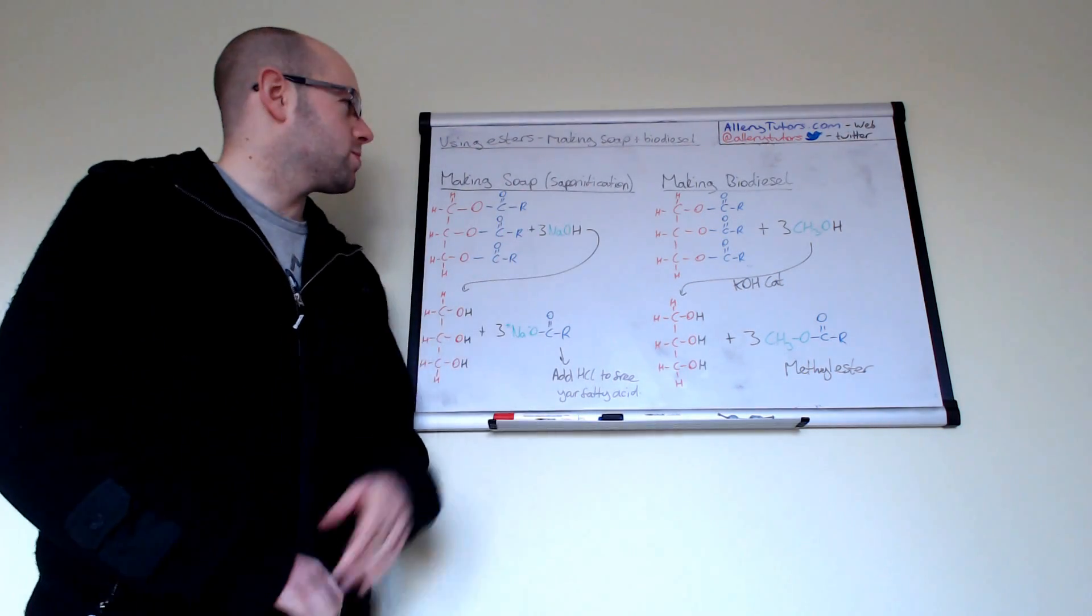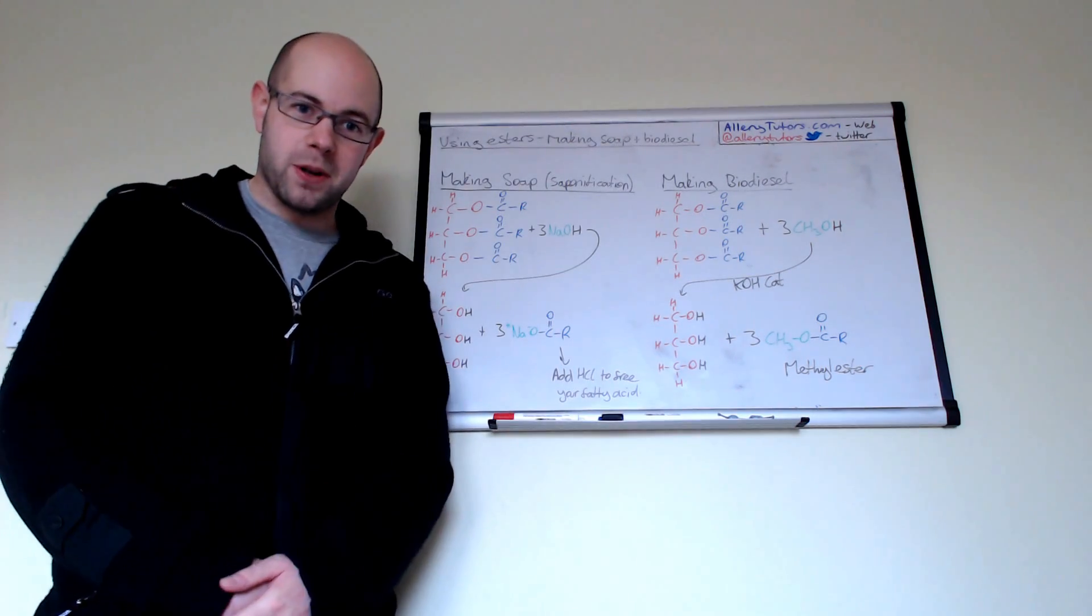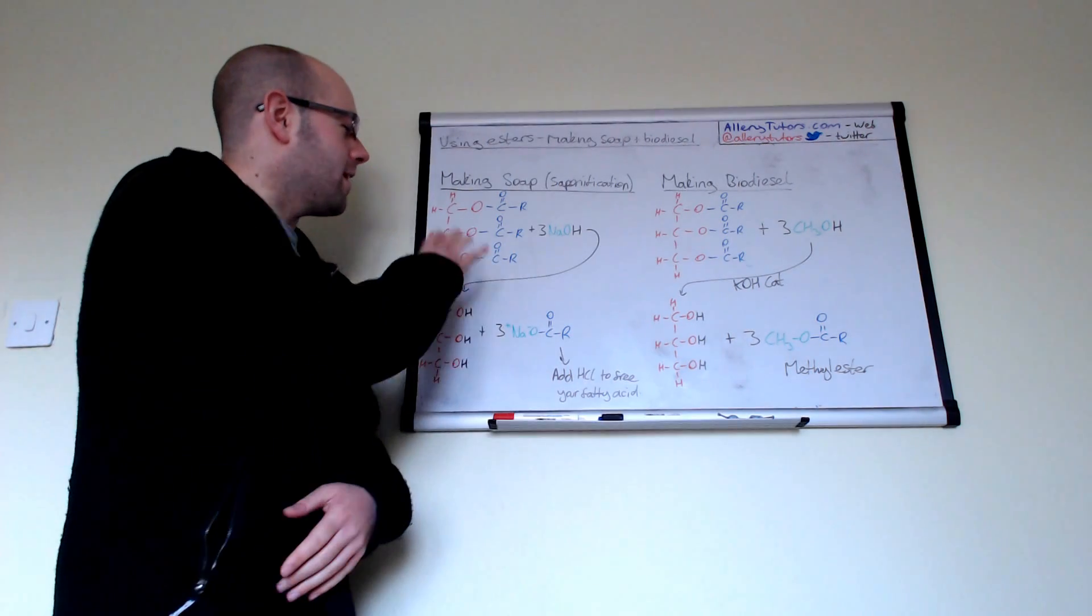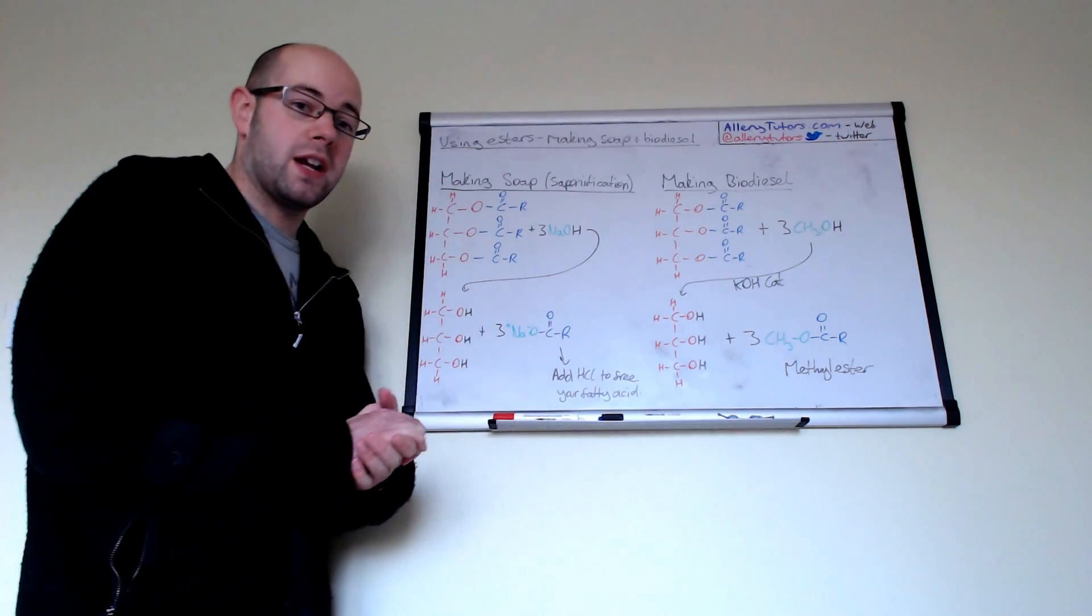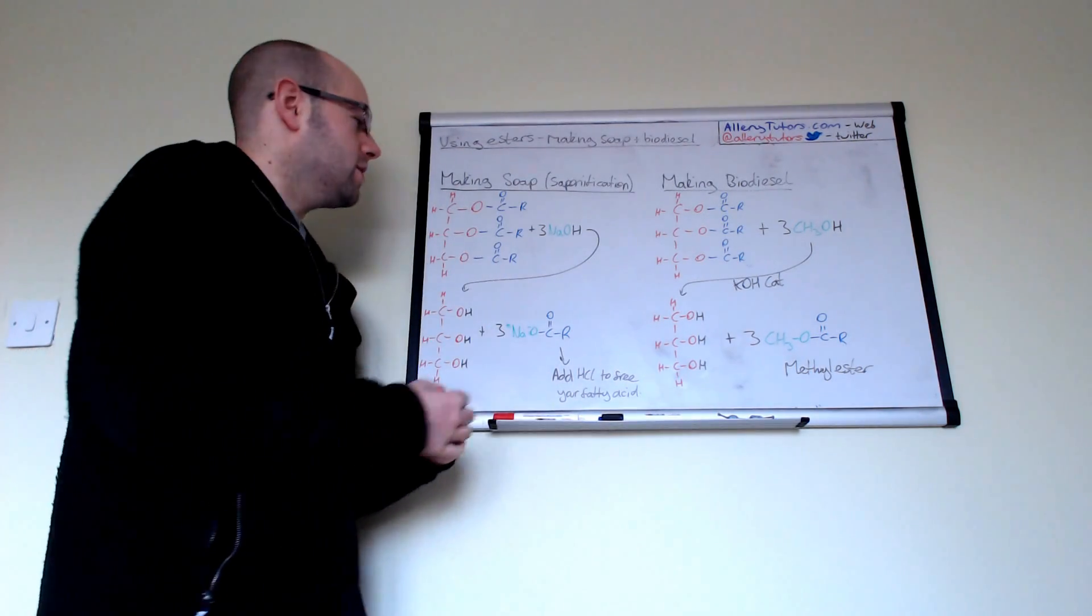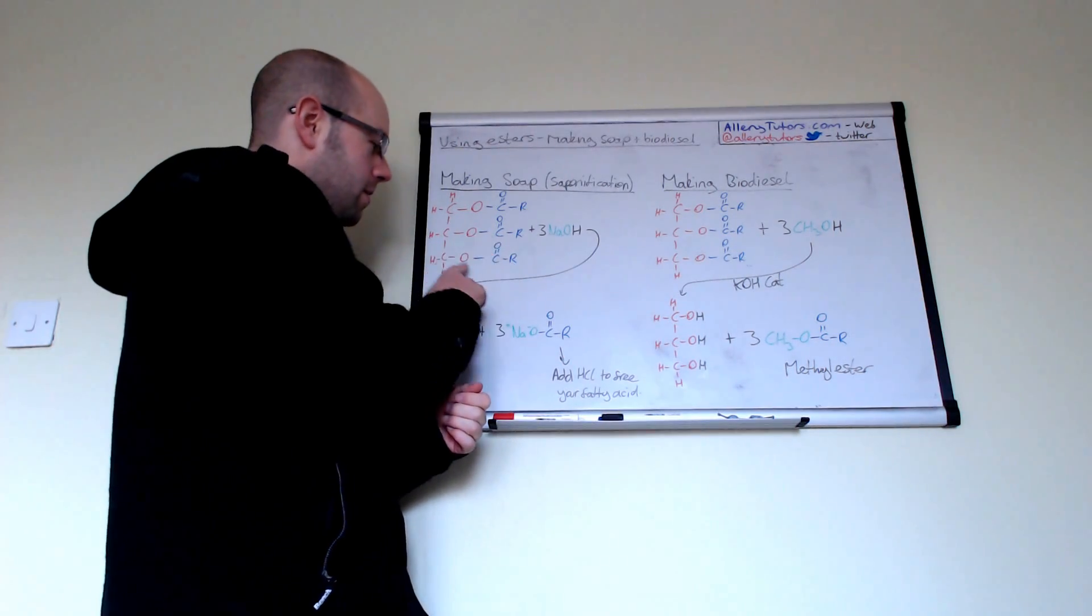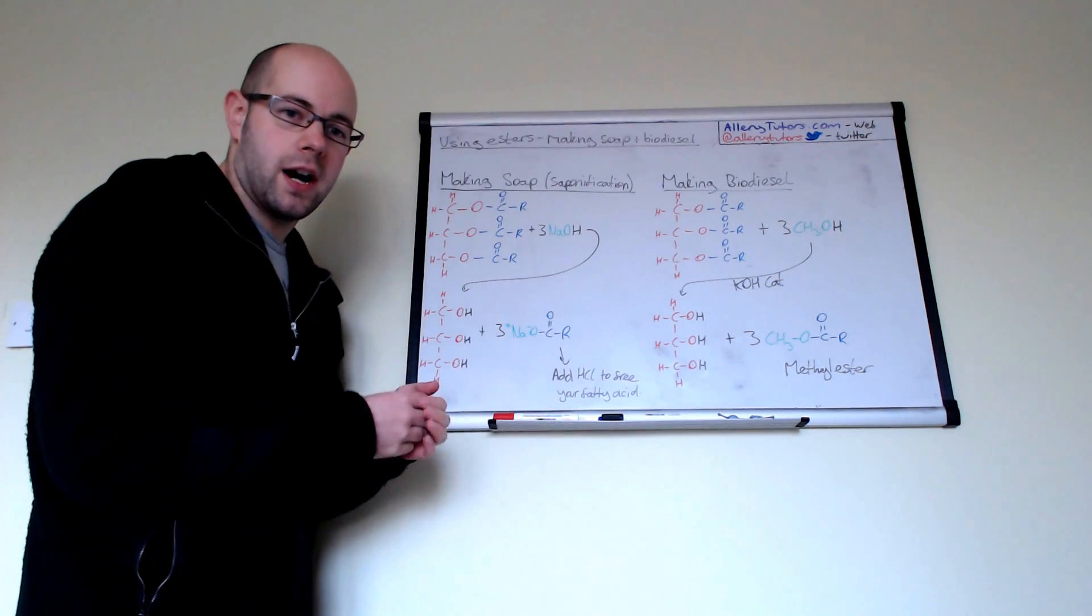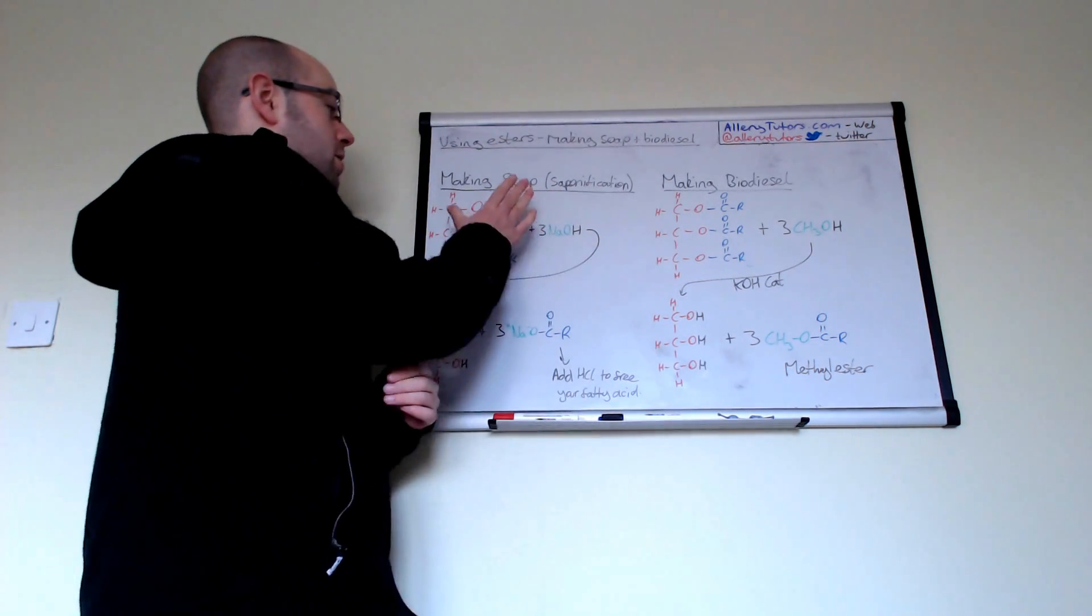These are two very specific examples. I'm going to start with soap first, which has a special name called saponification. It's made from a triester, also known as a triglyceride. This is your ester here. You can see the ester link, with your O and then OCR, where R represents a long hydrocarbon chain from fatty acids.